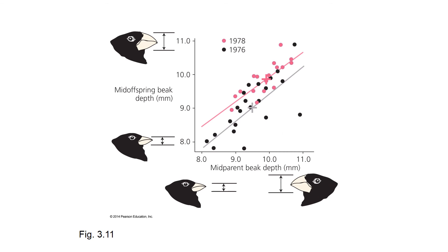The next big question is: is that variability heritable? In this diagram, the x-axis shows the parent's beak depth and the y-axis shows the offspring's beak depth. We have a very nice linear correlation here. If you have a parent with a small beak depth, you are likely to have a small beak depth. If you have a parent with a large beak depth, you are likely to have a large beak depth. That is good evidence for heritability.